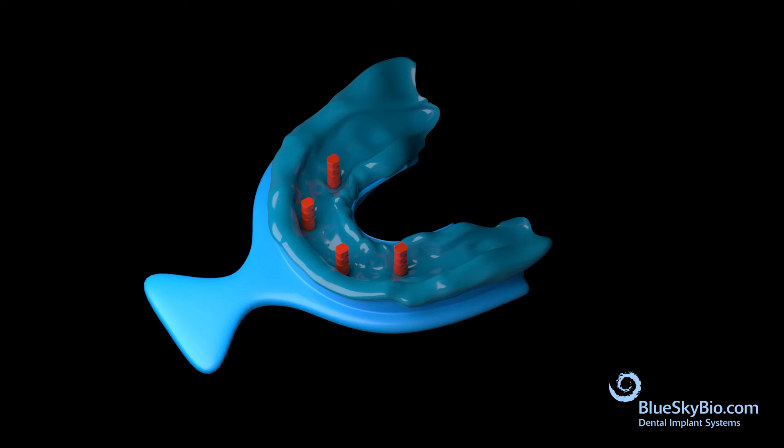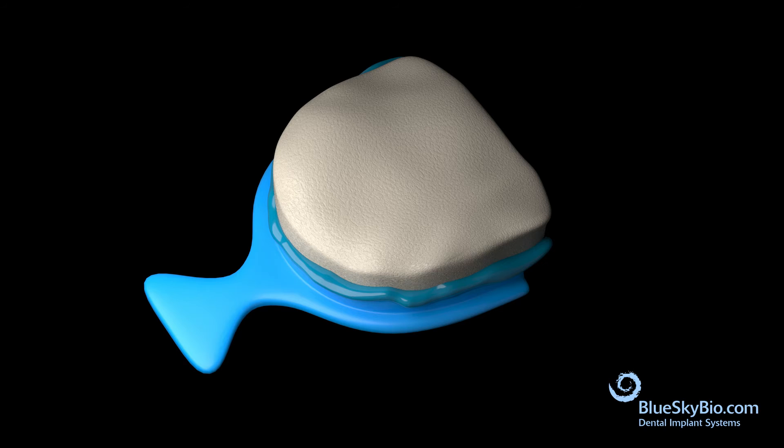Implant analogs are placed into the impression. Apply gingival material to the impression, pour stone in the impression and create the stone model.